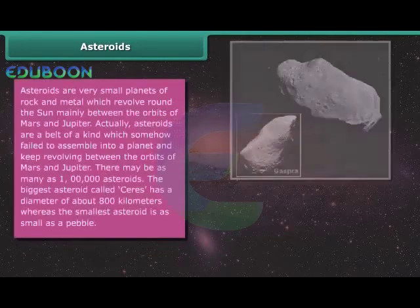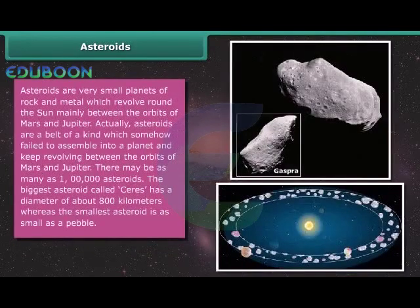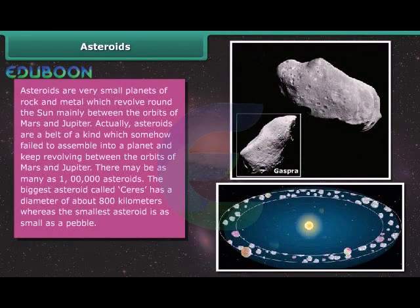Asteroids. Asteroids are very small planets of rock and metal which revolve around the Sun mainly between the orbits of Mars and Jupiter. Actually, asteroids are a belt of a kind which somehow fail to assemble into a planet and keep revolving between the orbits of Mars and Jupiter. There may be as many as one lakh asteroids. The biggest asteroid called Ceres has a diameter of about 800 kilometers whereas the smallest asteroid is as small as a pebble.